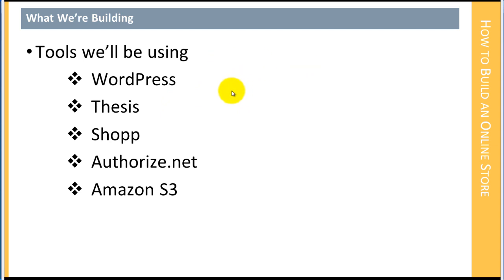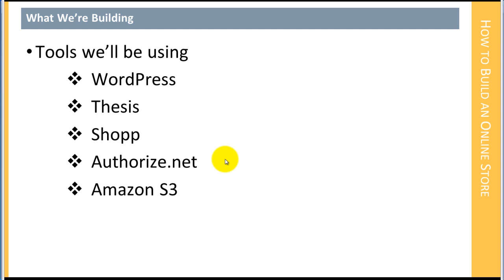The tools we're going to be using are WordPress, the Thesis theme, and the Shop plugin. Much of what we're going to do can be done in other WordPress themes as well. We'll be using Authorize.net as our payment provider, although I will also show you how to set up a standard PayPal version. Most tutorials demonstrate how to set up PayPal, but this time we're setting up Authorize.net, which will include the SSL certificate.